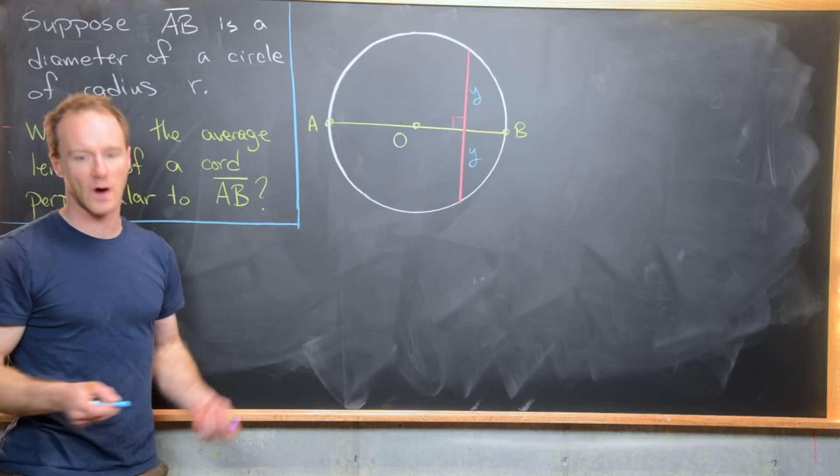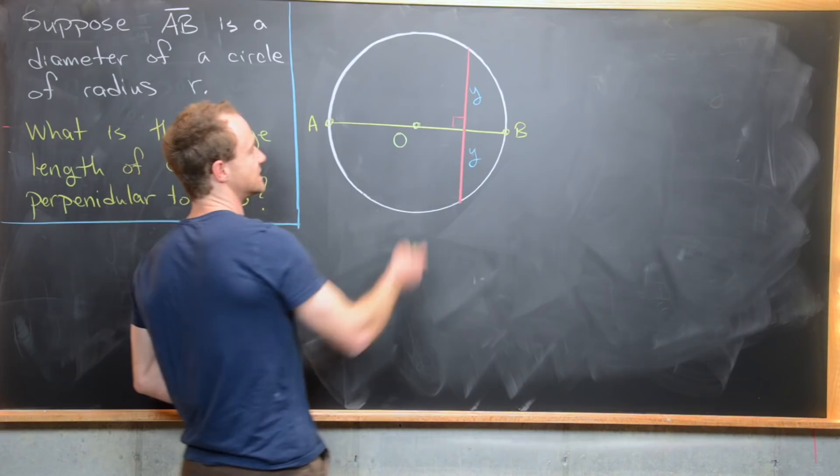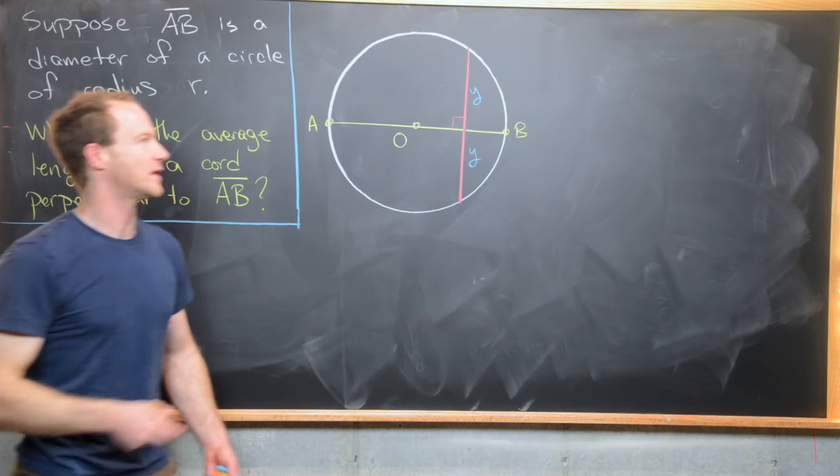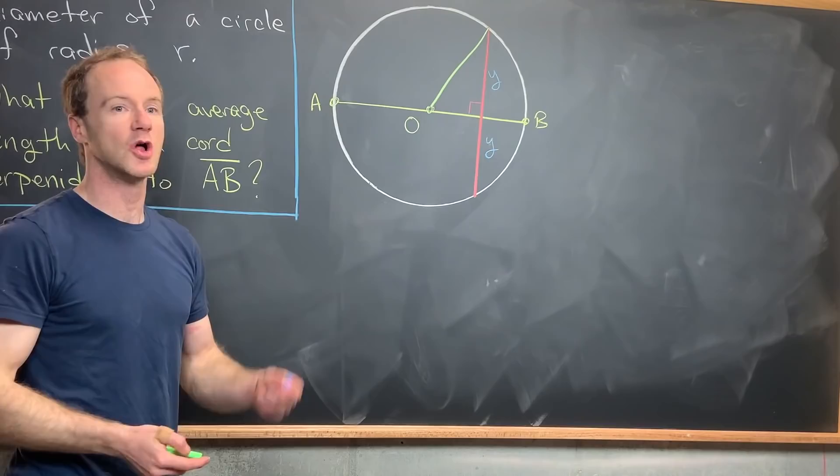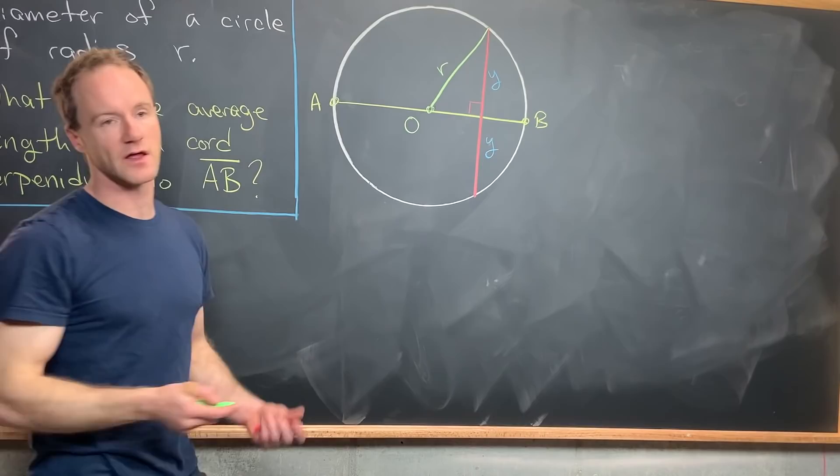Now the next thing that I want to do is draw a radius from O to this intersection point of the chord and the circle. So that's going to give us something like that. Since we know that goes from the center of the circle up to the circle, we know what the length of this is and it will be R, in other words, the radius of the circle.